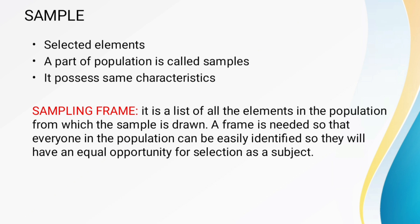The sampling frame is a list of all the elements in the population from which the sample is drawn. A frame is needed so that everyone in the population can be easily identified and has an equal opportunity for selection. For example, a list of all students helps identify and choose any student.